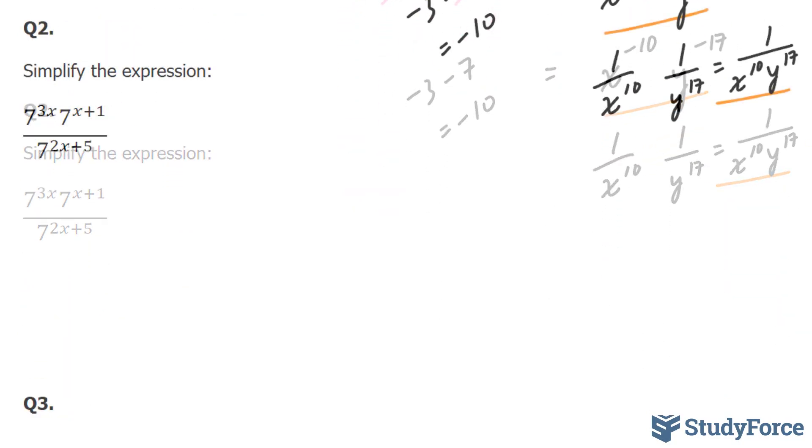Let's move on to question number two. In question number two, they're asking us to simplify this expression. 7 to the power of 3x times 7x plus 1 over 7 to the power of 2x plus 5.